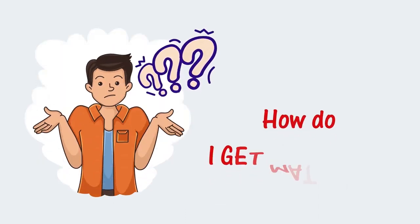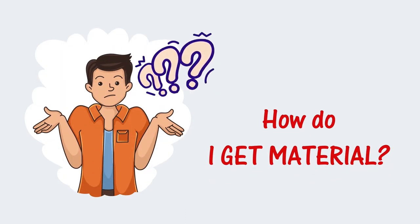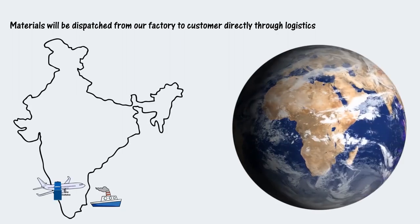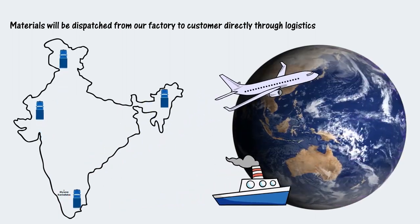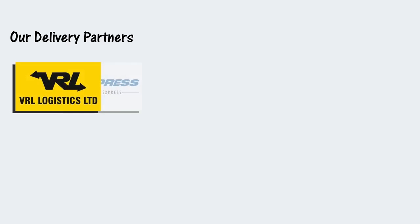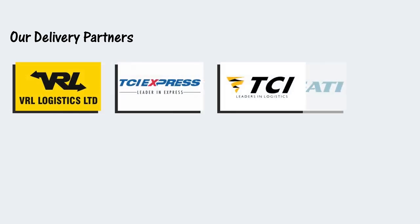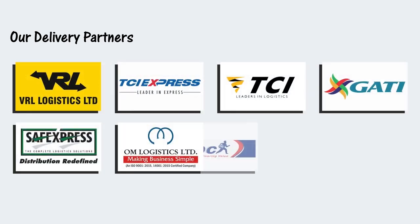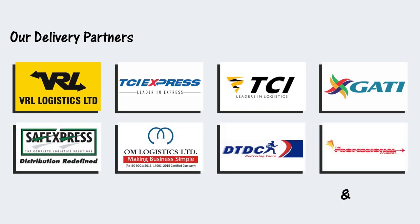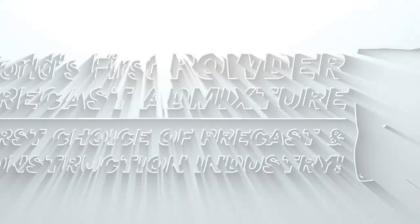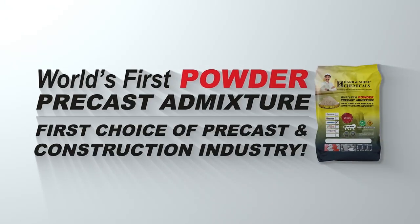Materials will be dispatched from our factory directly to the customer through logistics — our delivery partners. Rapidash: the world's first powder precast admixture and the first choice of the precast and construction industry.